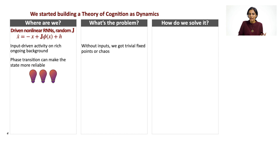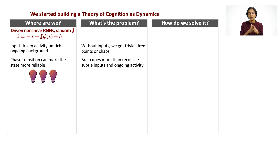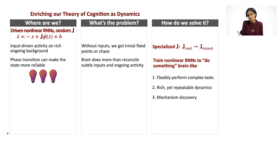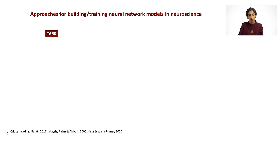We saw how phase transitions can make the state of networks like this more reliable. What we want to be able to do is to capture the richness of the brain in terms of doing more than just generic patterns of activity. We want to get this network to do tasks, to have specialized properties that allow us to make a tighter connection with experimental data. We want to get away from random recurrent interactions and train these networks to do something brain-like, get reliable and repeatable patterns of activity from them, and eventually discover mechanisms from them.